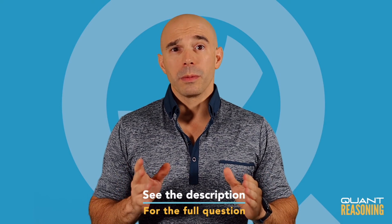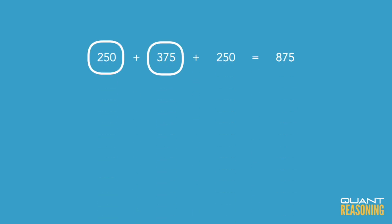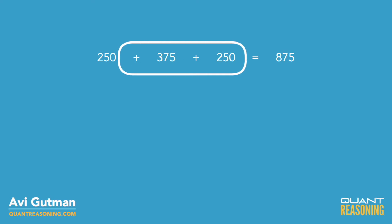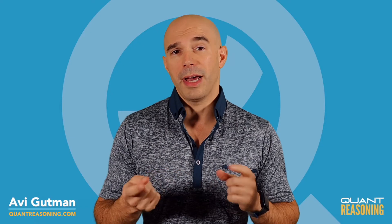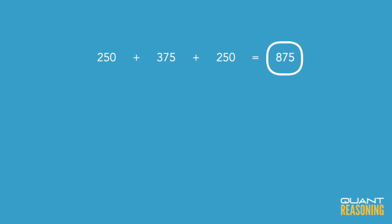We have two bikes that were purchased for $250 and $375. They were sold for a $250 profit. If we add all of that together — $250 plus $375 plus another $250 — I would add the $250s together first because that's easy. It's $500 plus $375, which is $875. That's the total amount of revenues that came in.